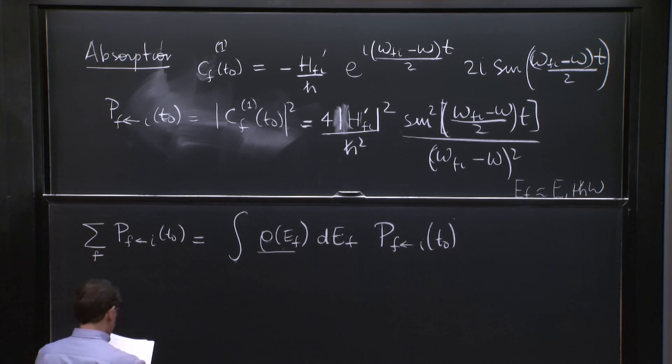We assume that as we integrate, we're going to have a narrow range so that this function, rho of Ef, and h prime fi can go out of the integral.